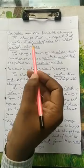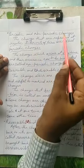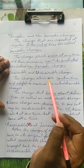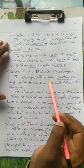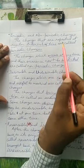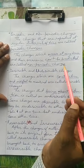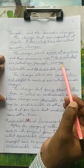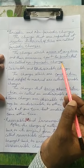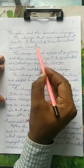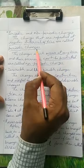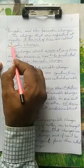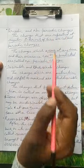About periodic and non-periodic changes: the revolution of Earth around the Sun, occurrence of seasons, and occurrence of day and night are examples of periodic changes, because they repeat themselves at a regular interval of time.